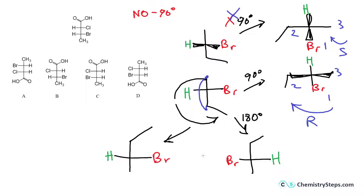Those are the key rules of Fischer projections. Now let's go back to our question. The first thing you want to do when comparing two Fischer projections is make sure the groups at the top and bottom are placed identically. These two structures are flipped upside down, so we want to rotate one 180 degrees so that CH3 is pointing down and the carboxylic acid is pointing up.